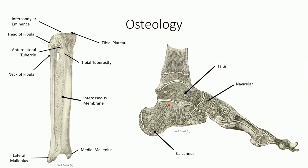The calcaneus is the largest of the tarsal bones, accepting the weight of the talus and everything above it, and transferring it anteriorly into the metatarsals and posteriorly into the ground through the pronounced calcaneal tuberosity. The anterior superior surface is lined with hyaline cartilage and articulates with the inferior surface of the talus. This includes a medial projection of bone known as the sustentaculum tali — a shelf-like projection that prevents the medial collapse of the talus. The anterior surface articulates with the cuboid bone.